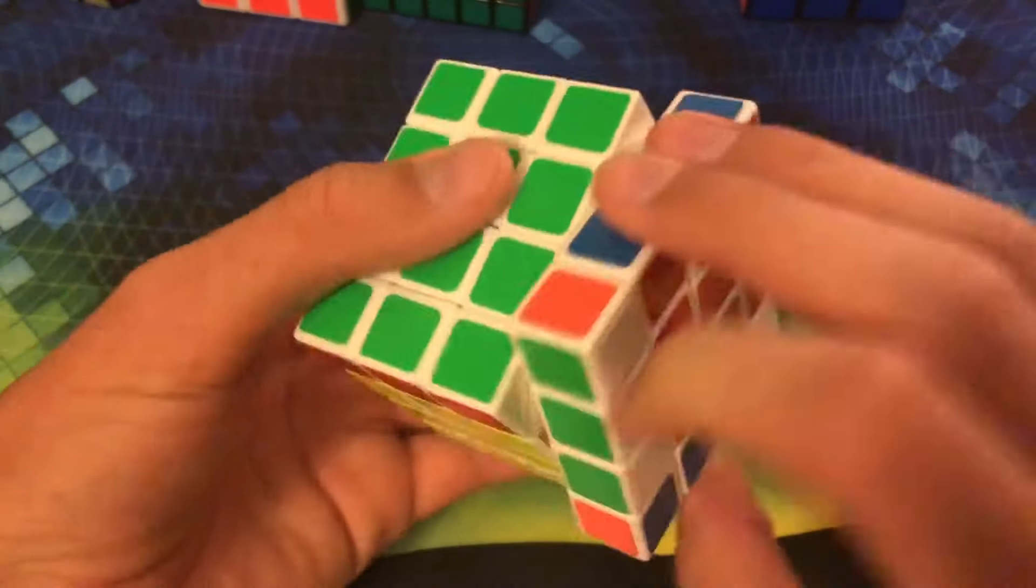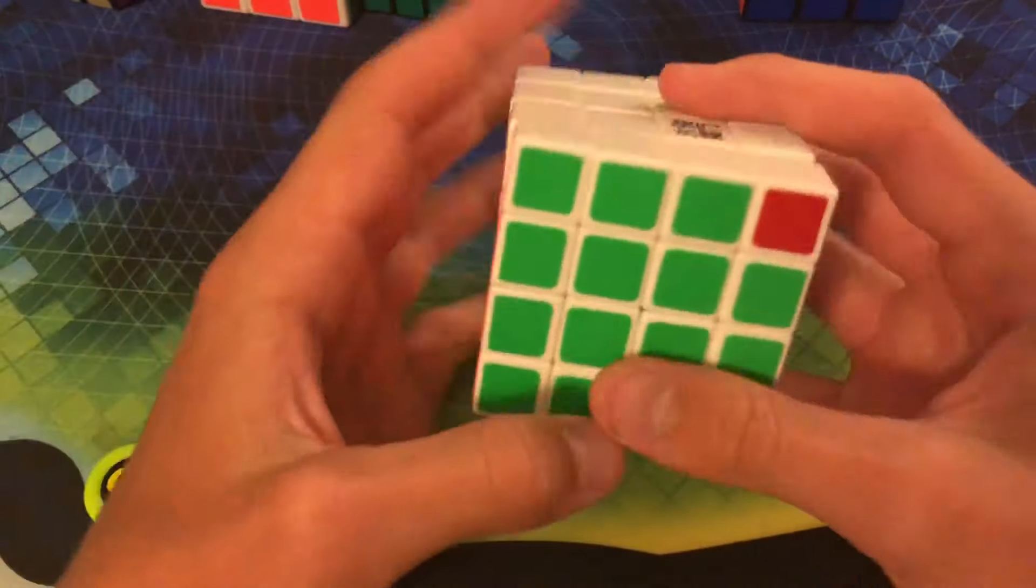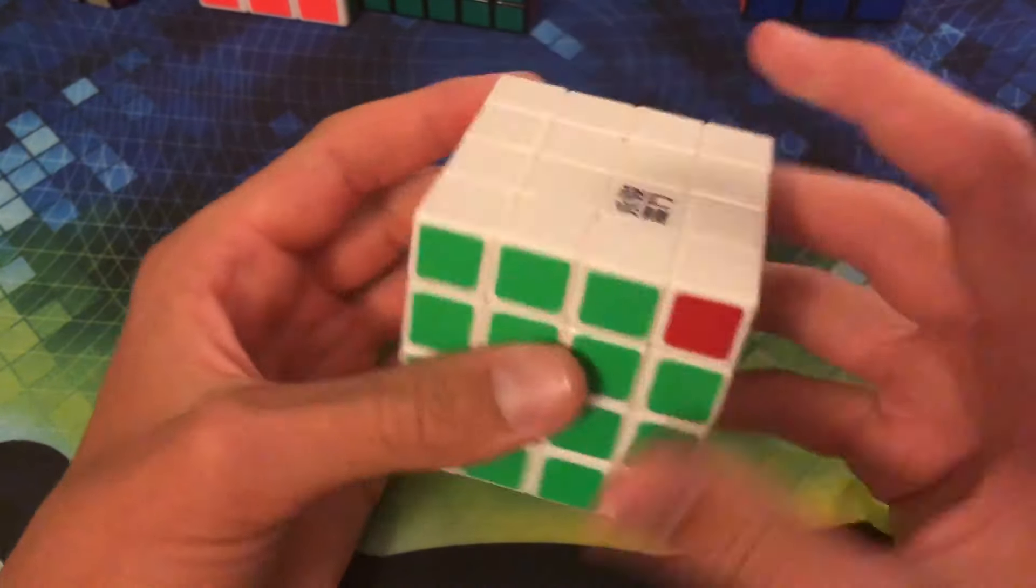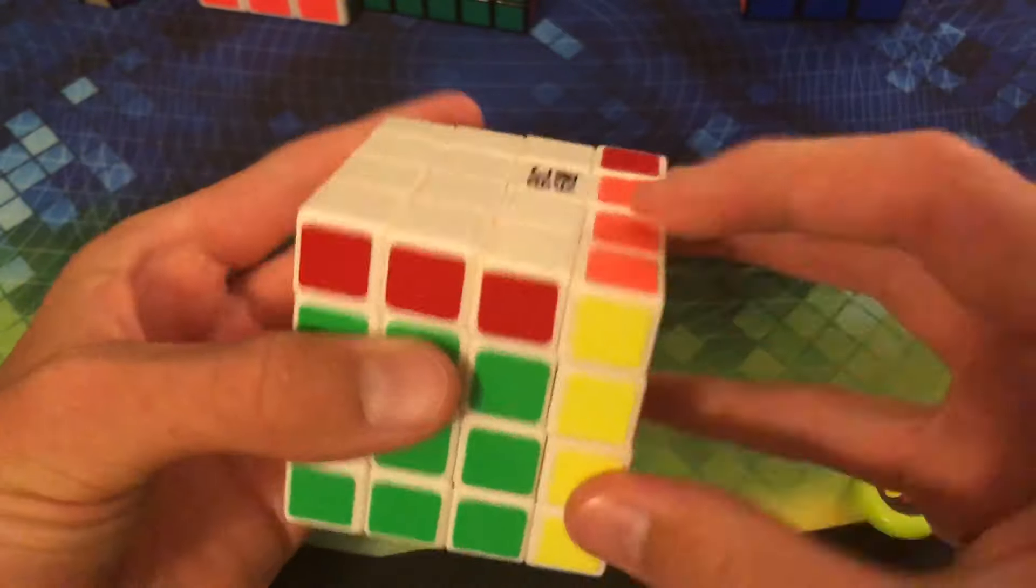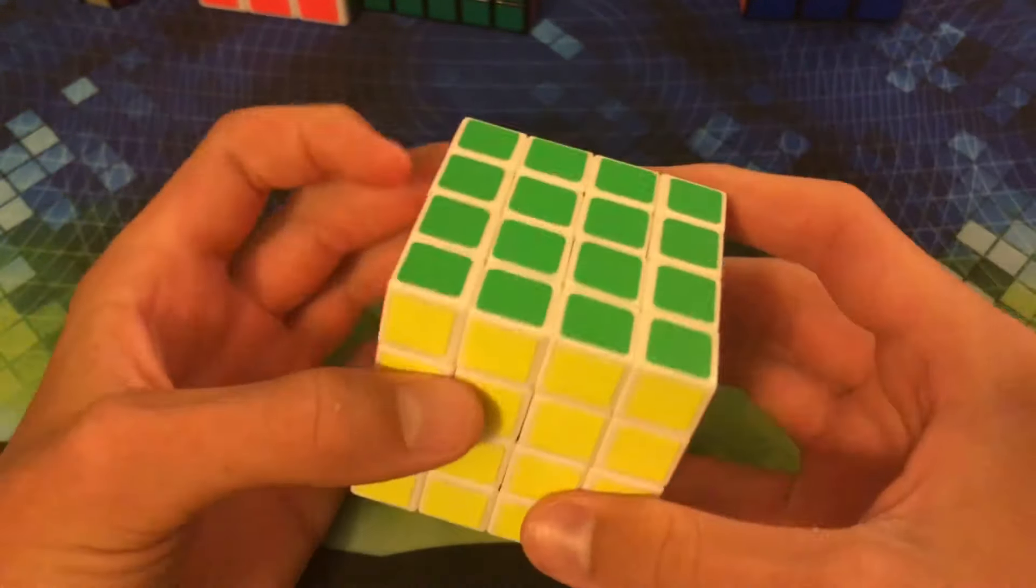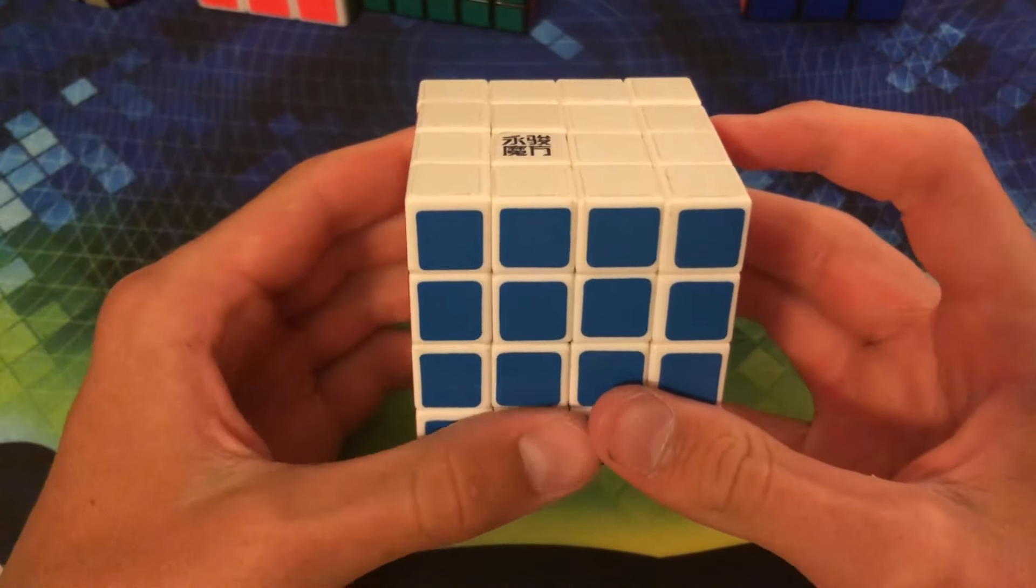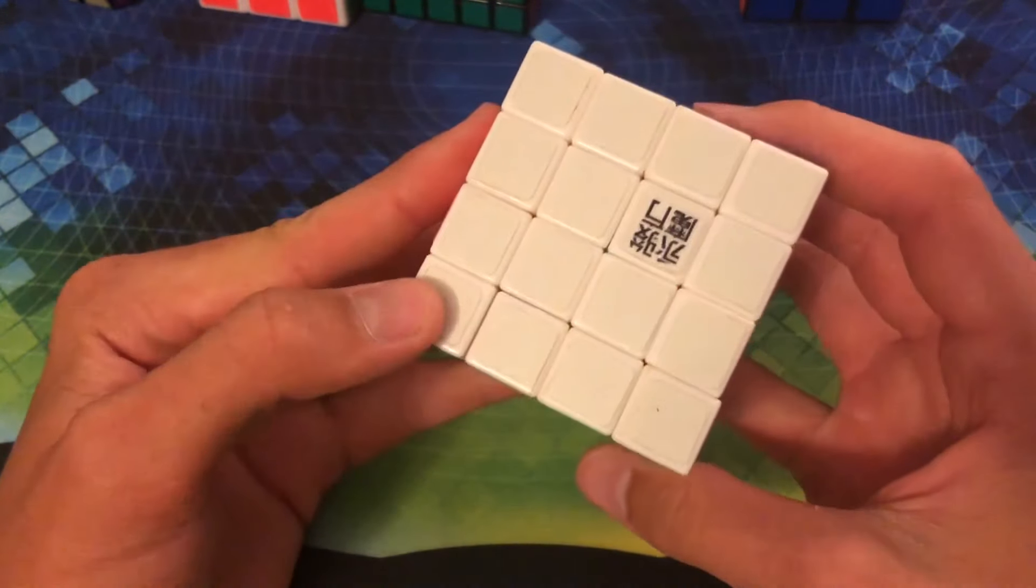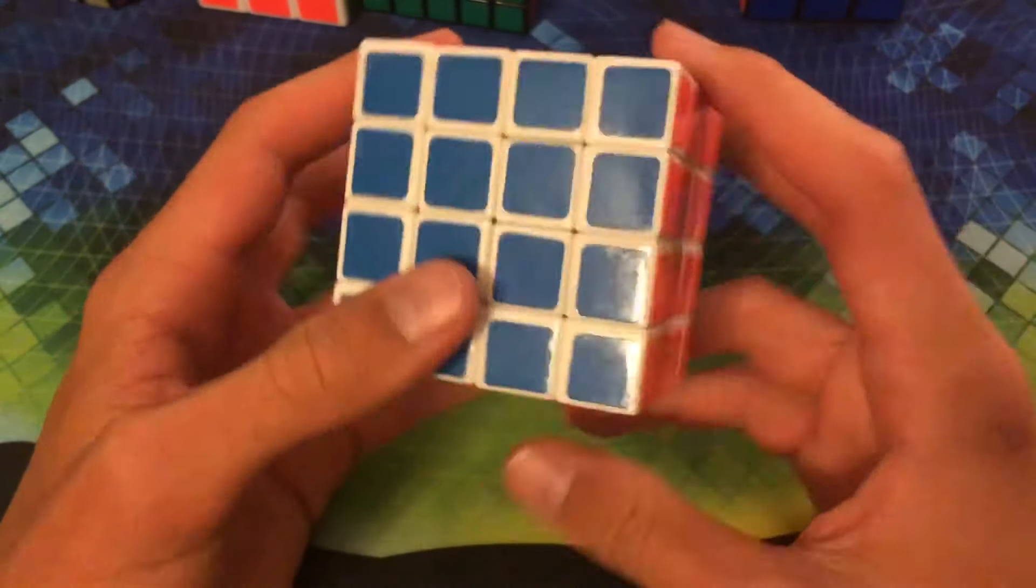At the time, it was pretty sweet, because this was, for me, filling the gap between my 3x3 and my 5x5. I wanted the 4x4 that I had heard so much about. And I didn't want a Rubik's 4x4, because I heard that those didn't turn very well. And at the time, I didn't know just how bad they actually were, to say the least.